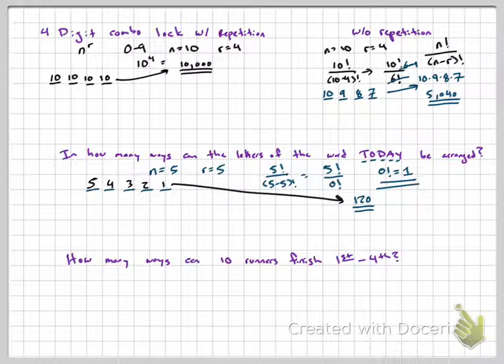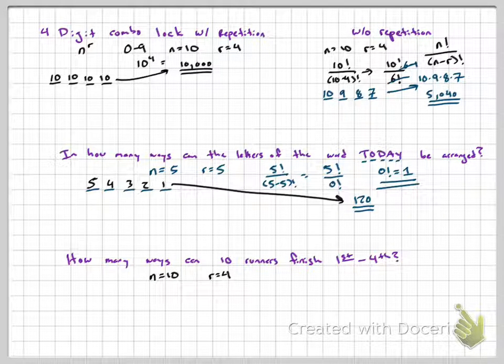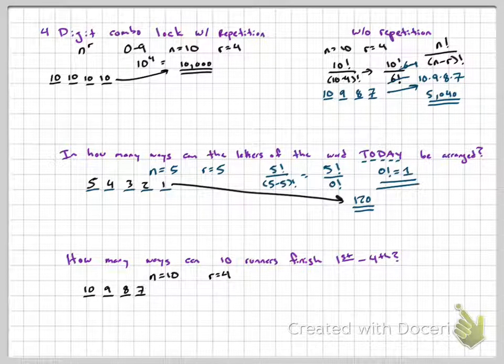Final problem. How many ways can 10 runners finish 1st through 4th? So we have 10 runners to choose from. If we're choosing 1st through 4th, that means we're choosing 4 times. Another way is you could do 10 runners, 9 runners, 8 runners, 7 runners.